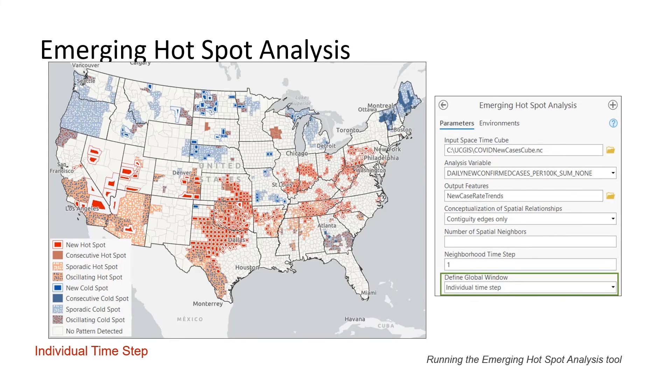Here the tool does pick up a large number of trends, and we can use these trends to guide policy. In the new hot spot areas, for example, it might be time to double down on social distancing, mask mandates, and limiting large gatherings. In counties that are new cold spots, on the other hand, it might be time to begin making plans for relaxing restrictions.